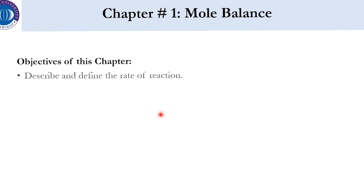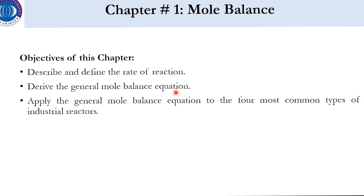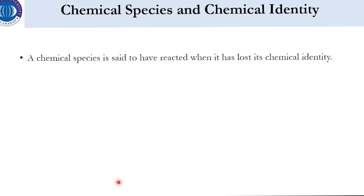Starting chapter number one, related to mole balance. The objectives are: (1) to describe and define the rate of reaction and derive the general mole balance equation — which we start today; (2) apply the general mole balance equation to the four most common types of industrial reactors — batch reactor, CSTR, plug flow reactor (PFR), and packed bed reactor (PBR); and (3) develop a preliminary form of the design equation for these four reactors.